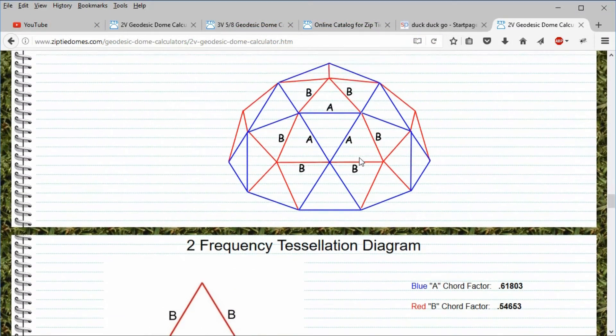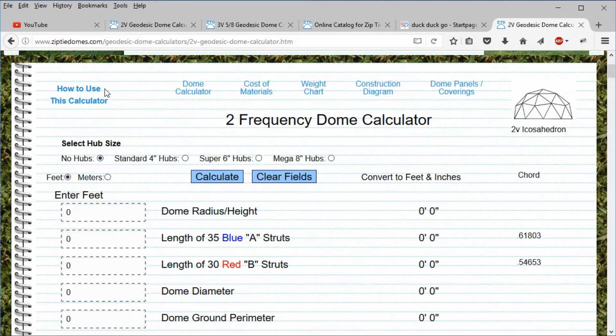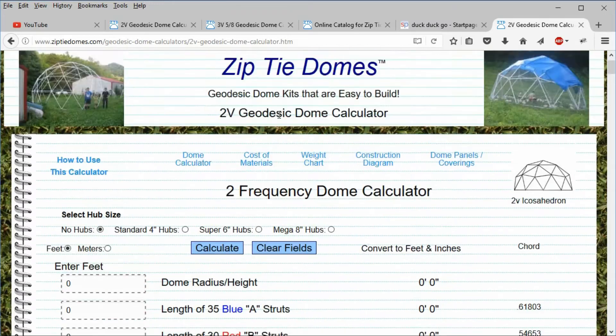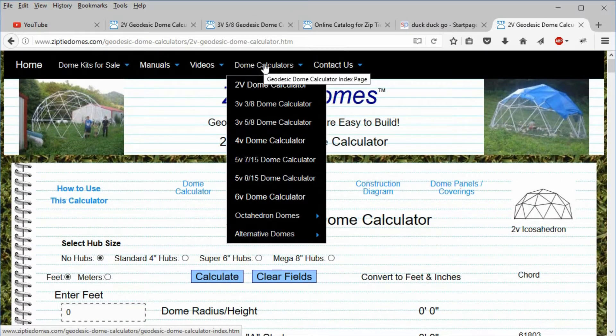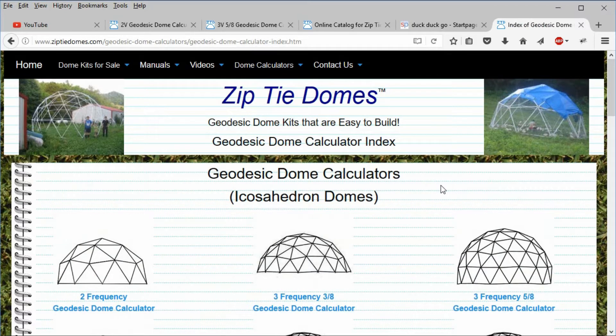To get a quick visual overview of our calculators, click on the dome calculator link to go back to the top of the page. Then click on the dome calculator's index tab in the navigation bar. This page will bring up a visual icon to represent each dome frequency and the type of dome.